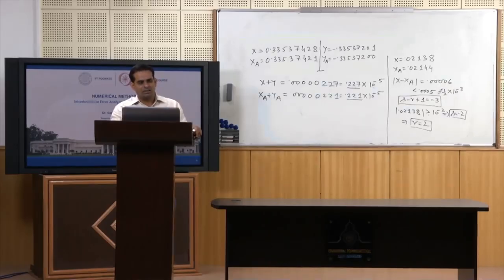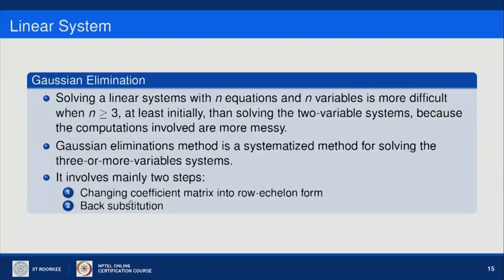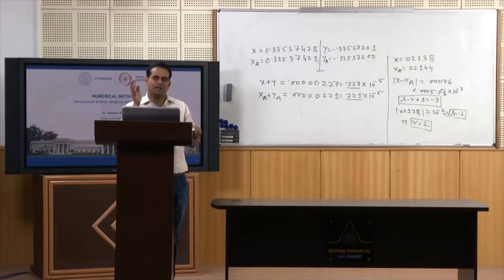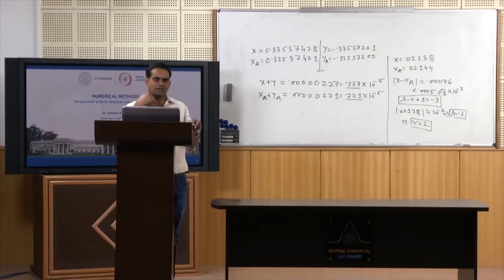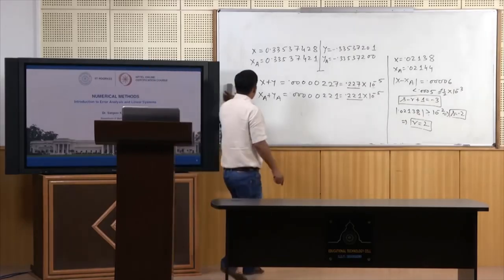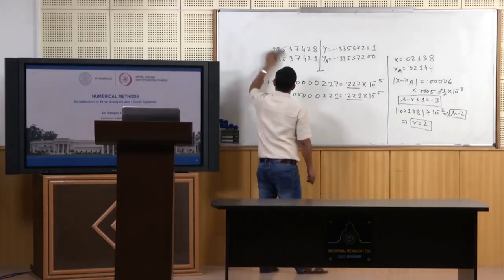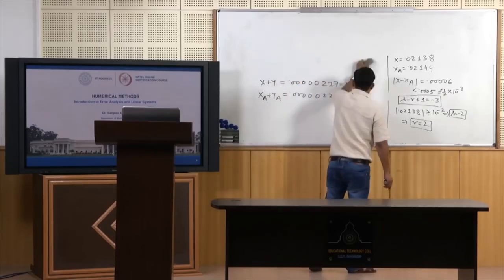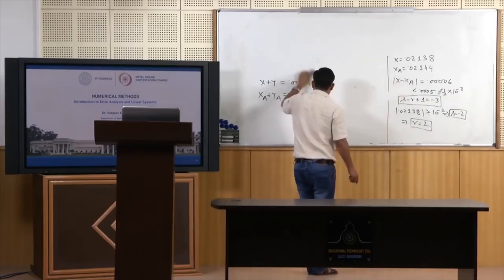Here I want to introduce a direct method called Gaussian elimination. It is a systematic algorithm for solving a system of linear equations with 3 or more variables and the same number of equations. It involves mainly two steps: first, changing the coefficient matrix into row echelon form, and then back substitution. Let us take an example of a 3×3 system to explain and then solve it.